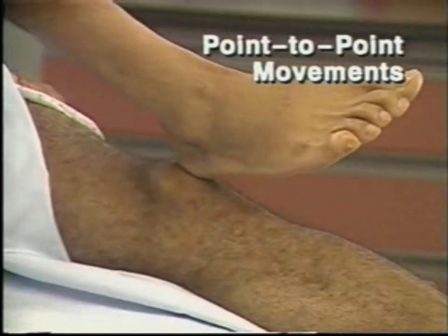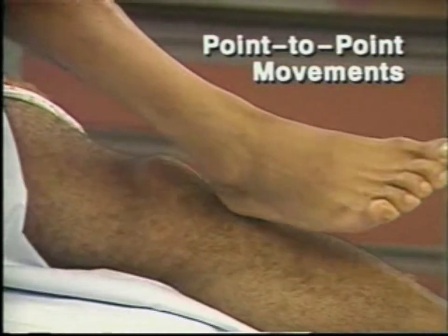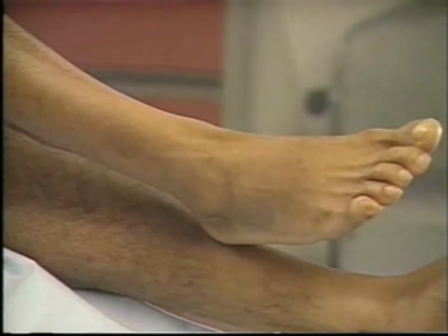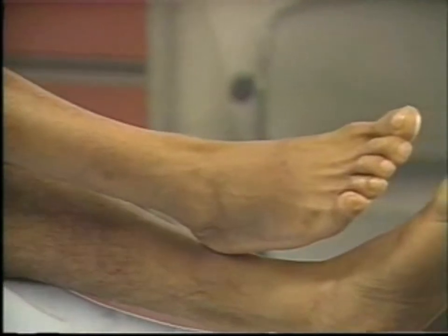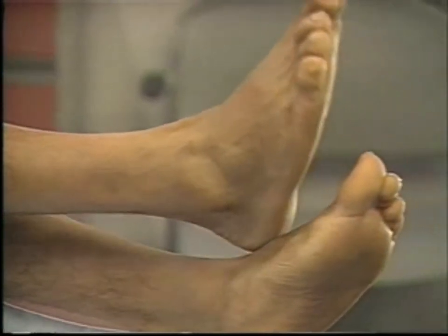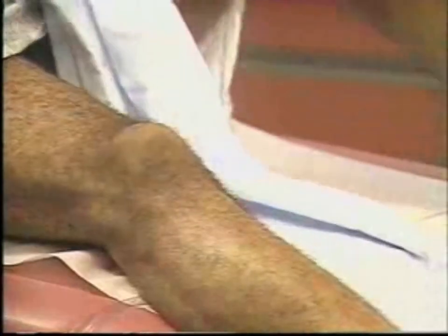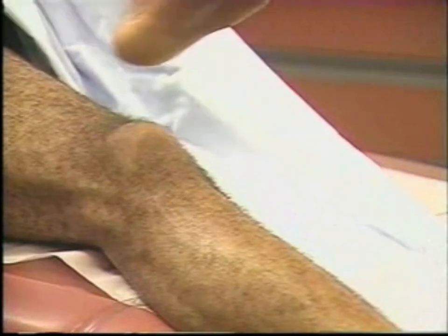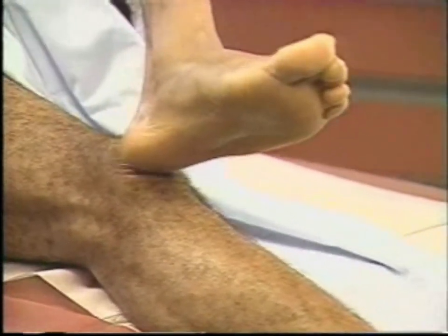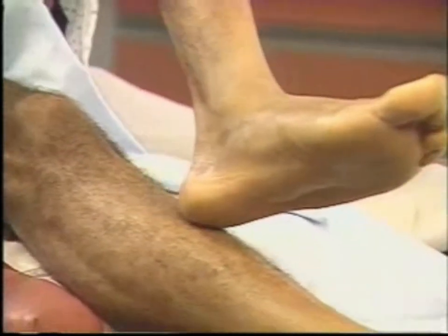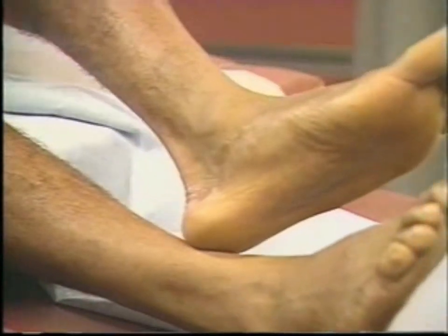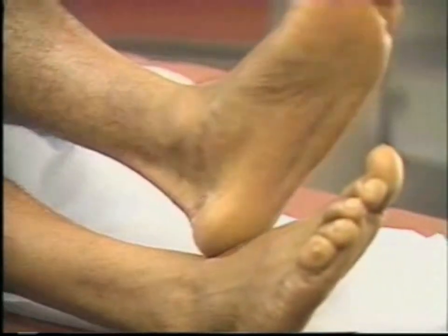To test point-to-point movements of the legs, ask the patient to place one heel on the opposite knee and then run it down his shin to the big toe. The patient should be able to do this smoothly and accurately. Note any tremor or awkwardness. Assess both legs.